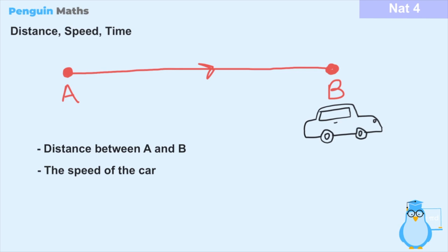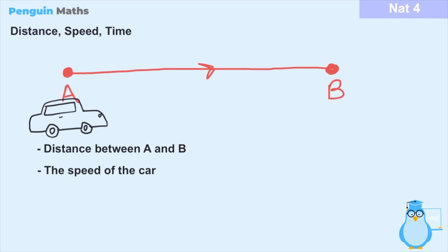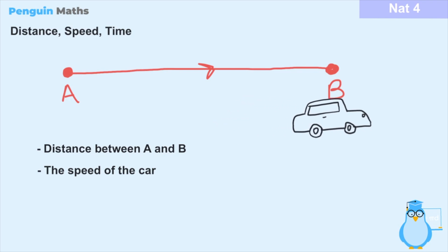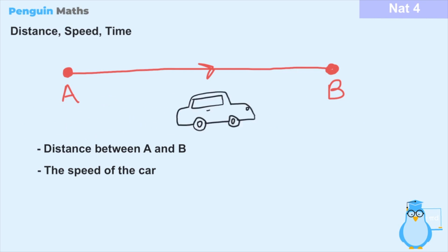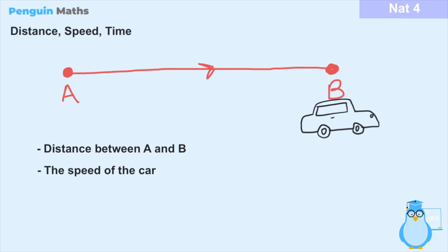The second thing we can measure would be the speed of the car — did it move very slowly from A to B, or did it travel fast? To measure that we have to know the speed, which can be measured in things like kilometers per hour, miles per hour, or meters per second, depending on the task. The final thing we can measure would be the time — how long did it take for the car to travel from point A to point B — which we can measure in seconds, minutes, hours, or days, depending on the task.